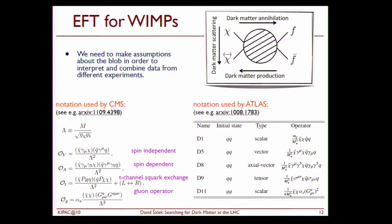Effective field theory for WIMPs. This is what we use to interpret our results at the LHC. CMS uses this notation, Atlas uses this notation. So the notation is a bit different, but essentially the thing is the same. And you can see that there is a couple of operators, a vector operator for the spin independent interpretations, and we have also a few more operators depending on the nature of the interaction here.